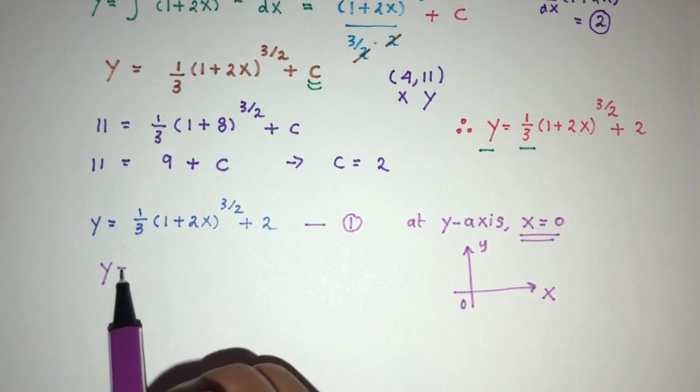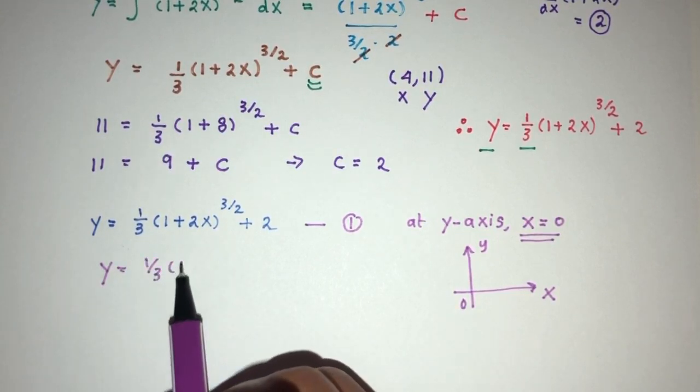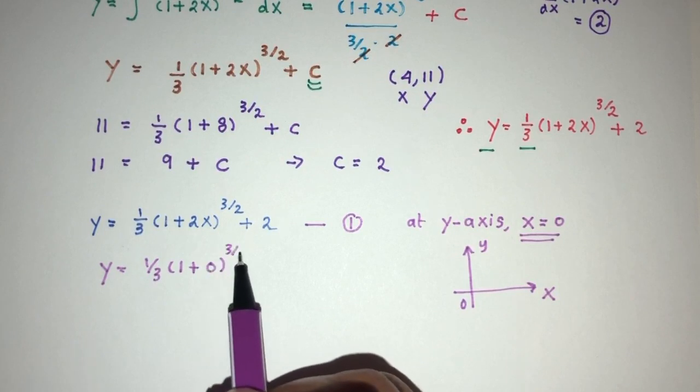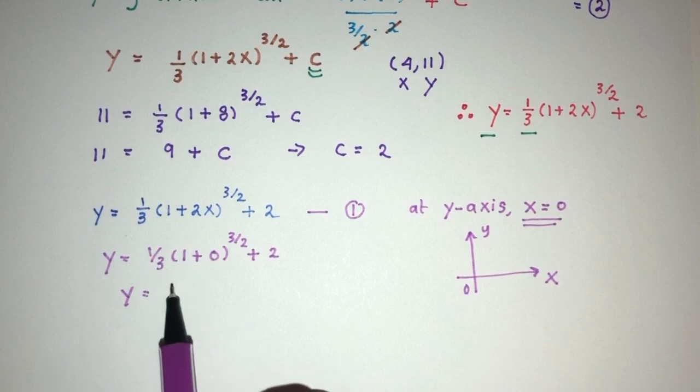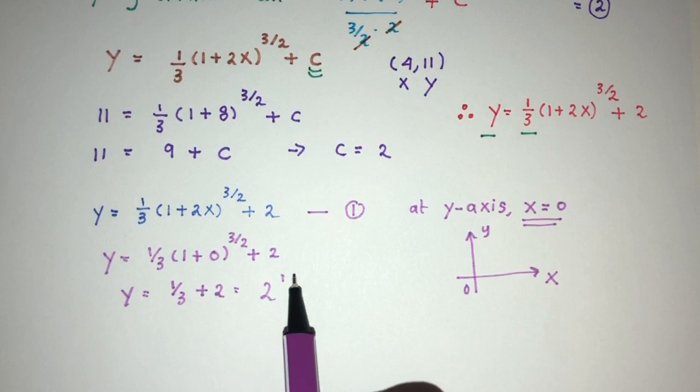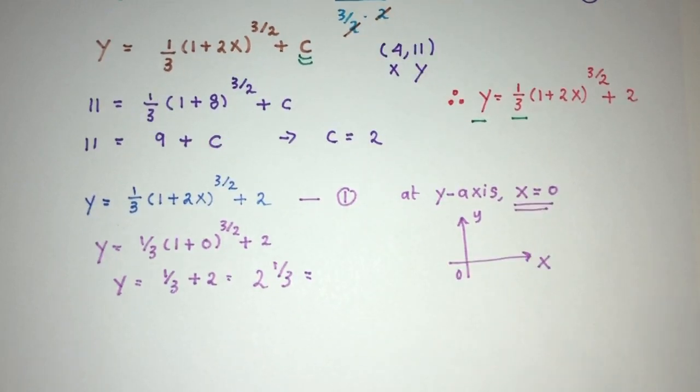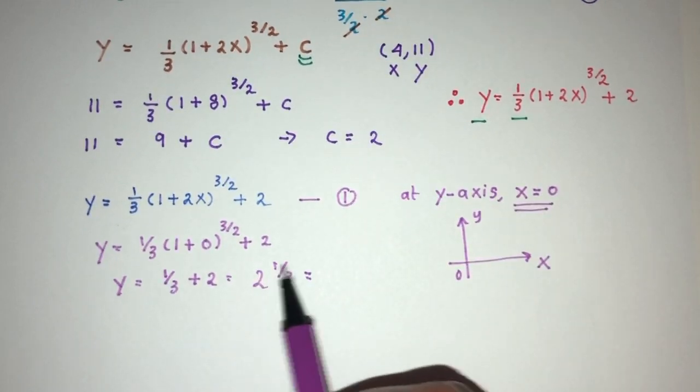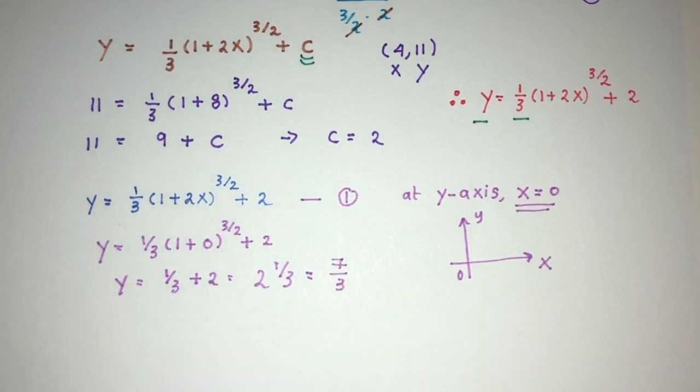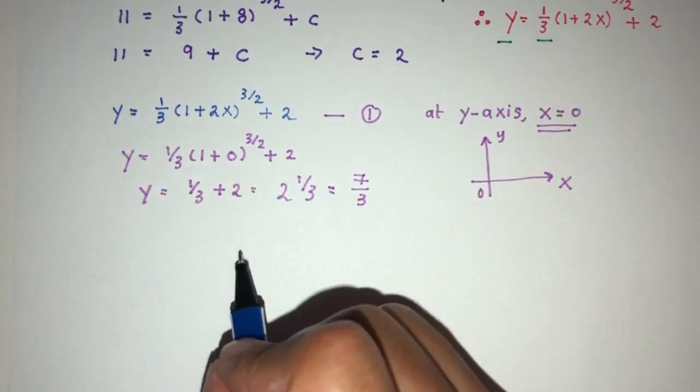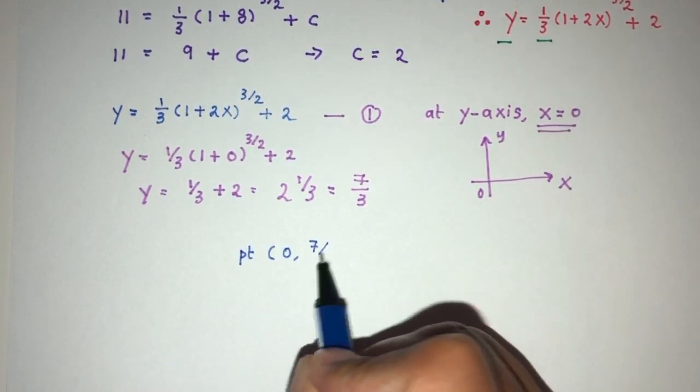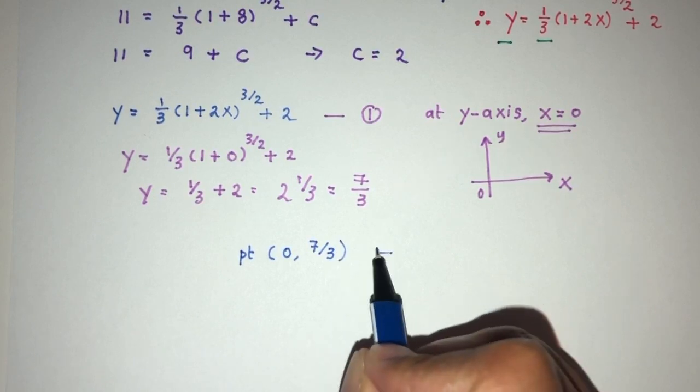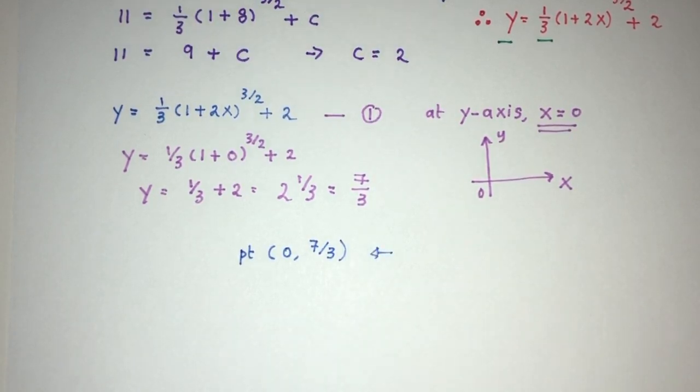You will have y equal to 1/3 times 1 plus 0 to the 3/2 plus 2. So you will have y is equal to, this will be 1, that will be 1/3 plus 2, that will be 2 and 1/3. If you want to, you can always expand this, up to you. 2 times 3 is 6, plus 1 is 7, 7/3. So the point of intersection will be what? The point will be the x value is 0, and the y value will be 7/3. Okay, and this will be a question involving integration.